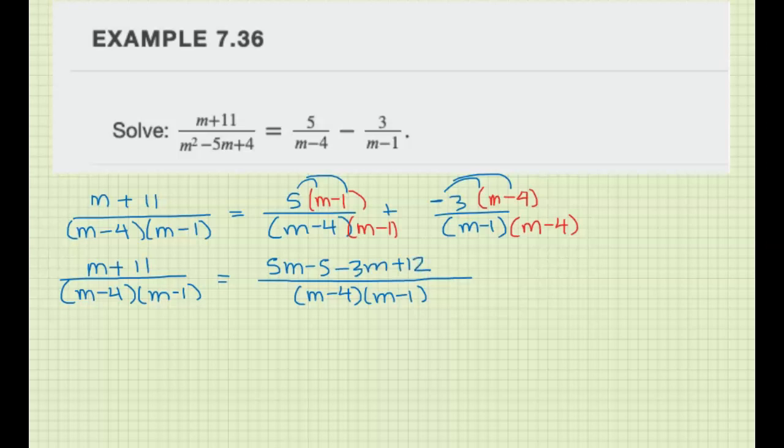All right, compare the denominators across the equal sign because they're the same, cross them out. If they're not the same, then you need to make them the same by multiplying by the right things.